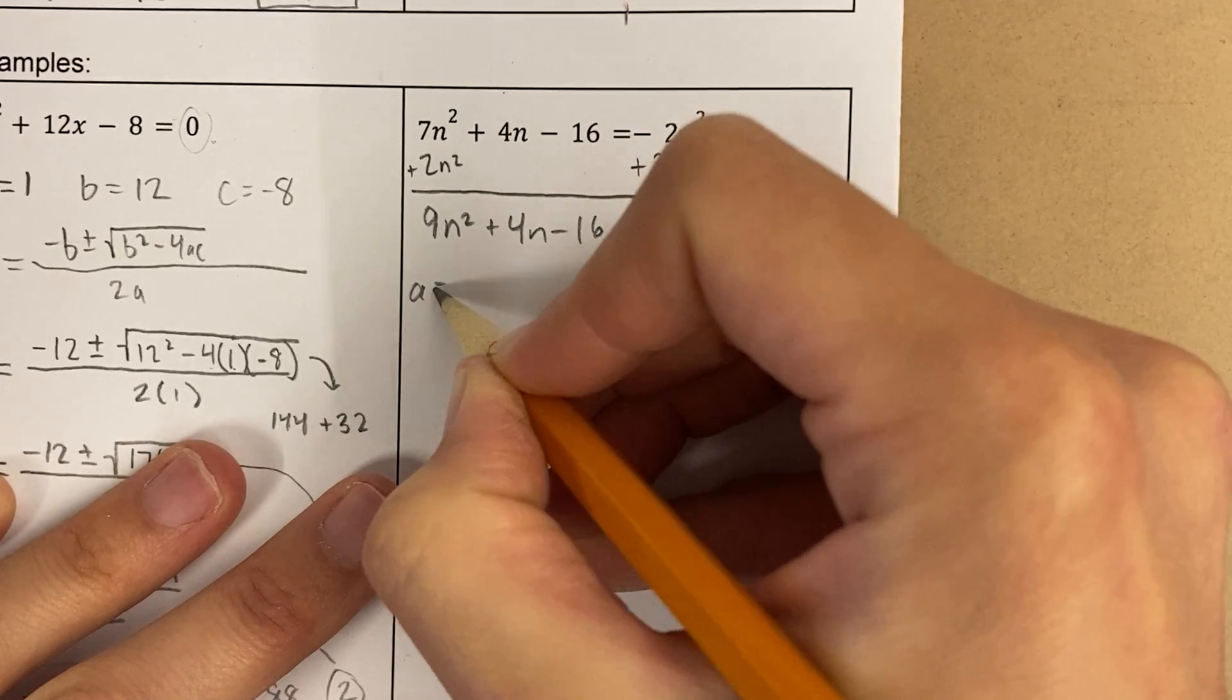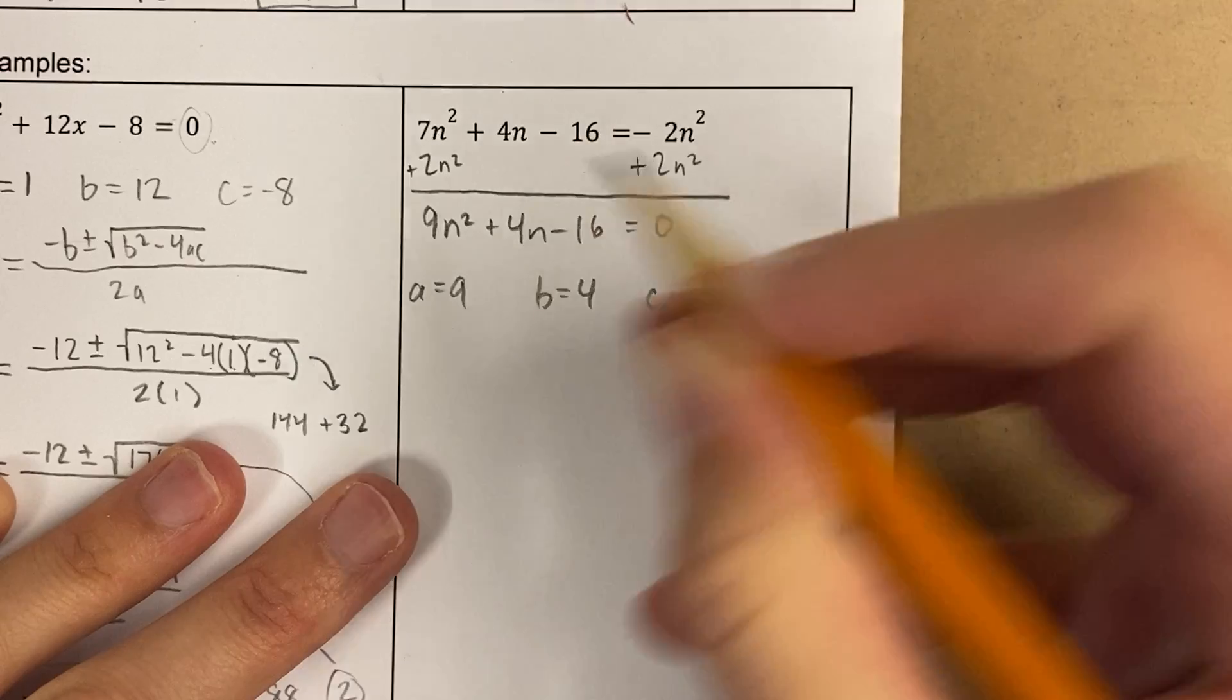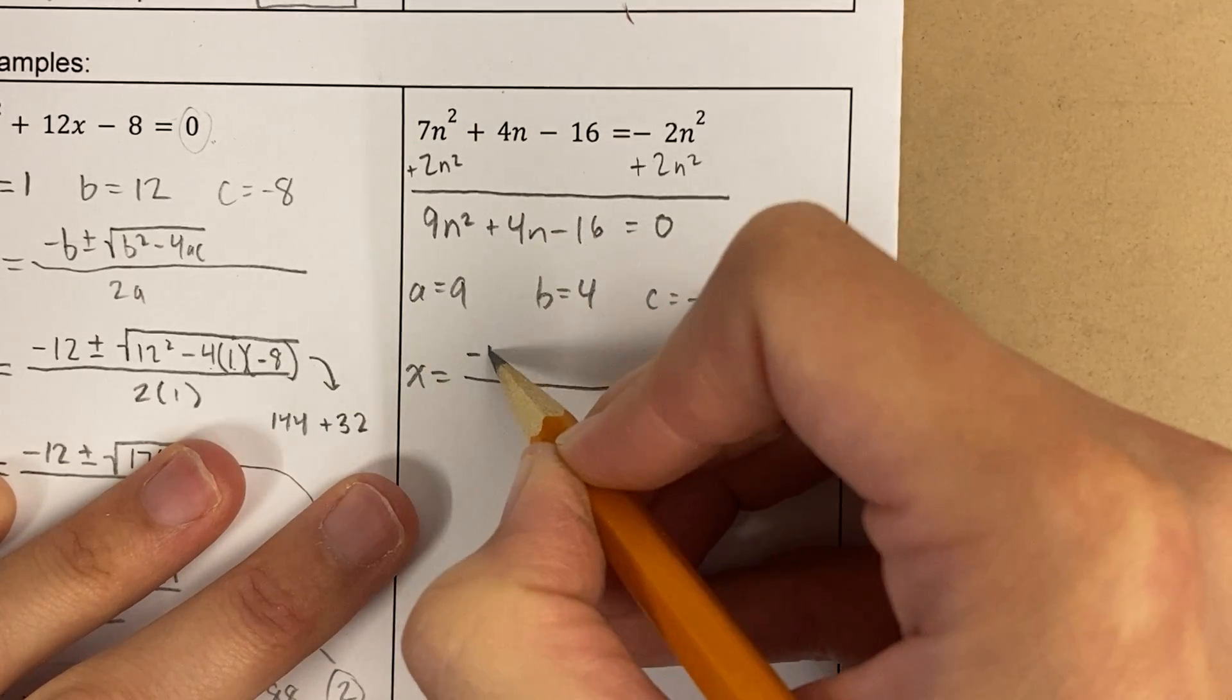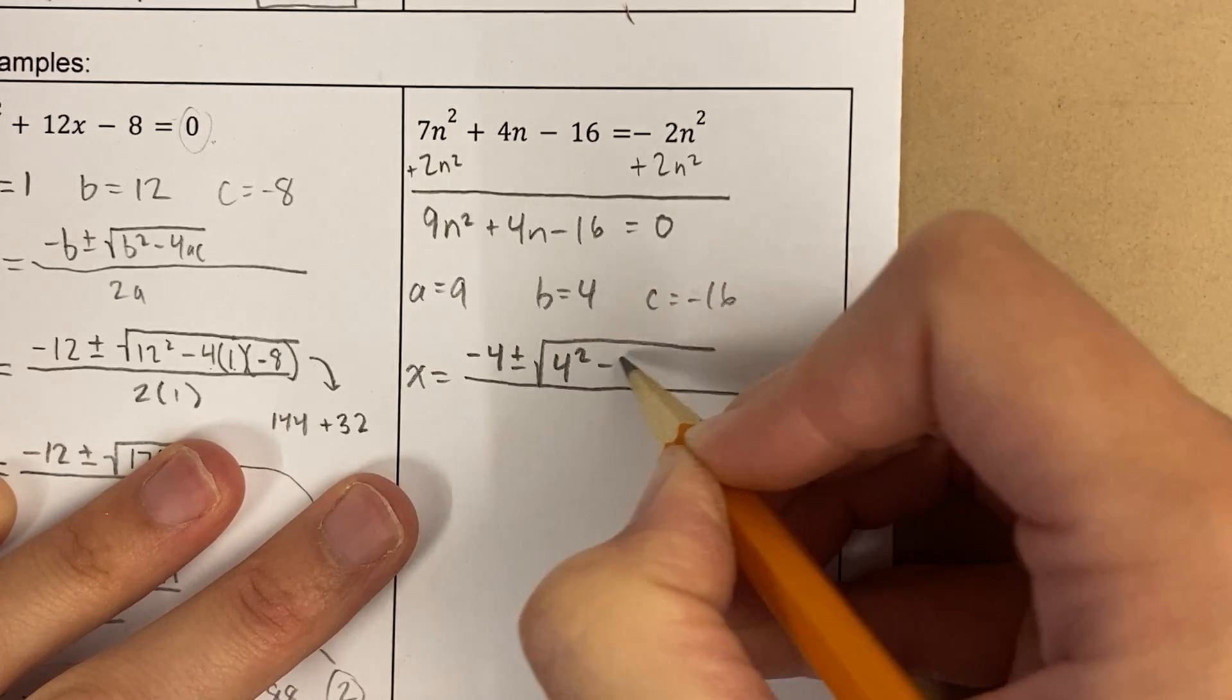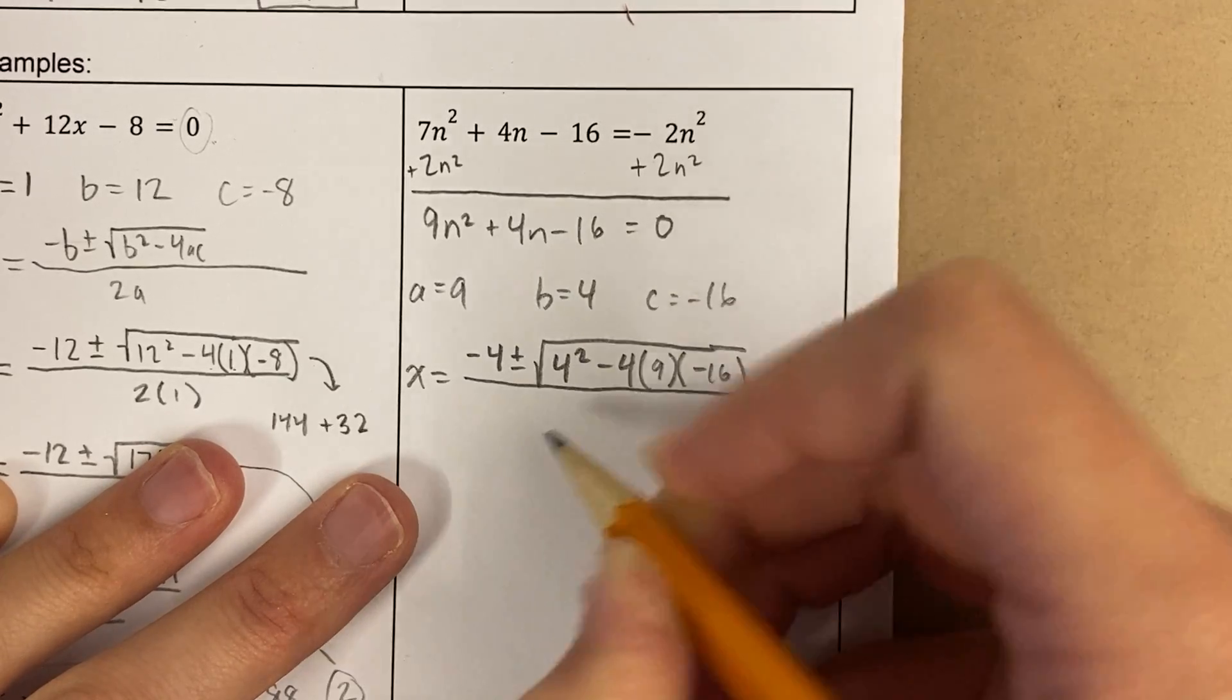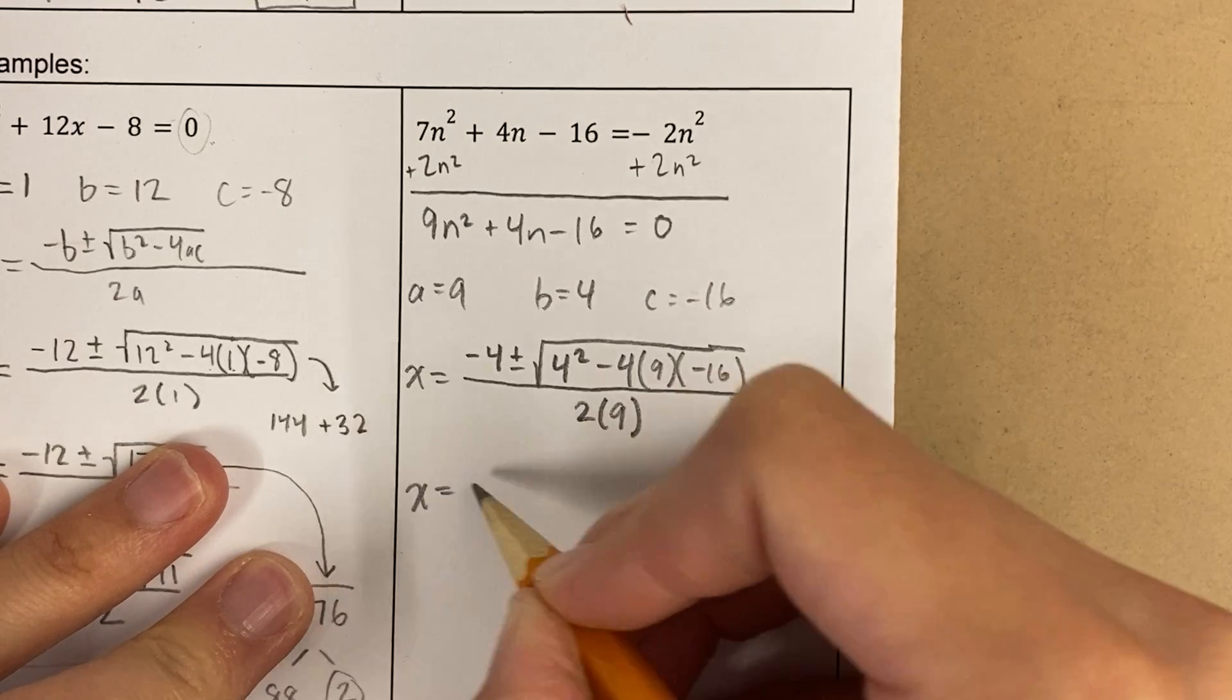And now I'm going to go ahead and do my regular quadratic formula. Okay, so that's opposite of b plus or minus the square root of b squared minus 4 times a times c over 2a. Okay, all right, let's keep going.